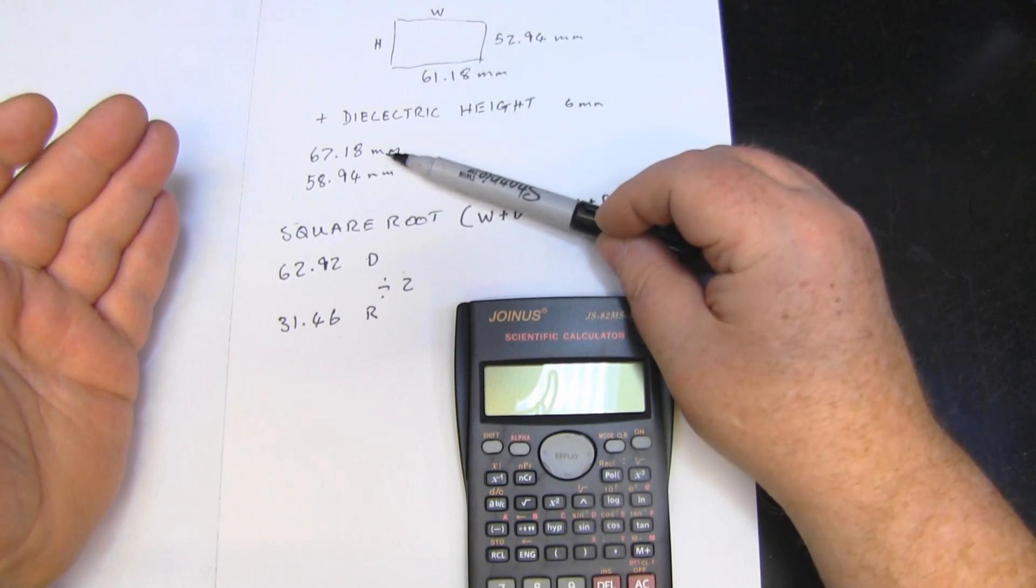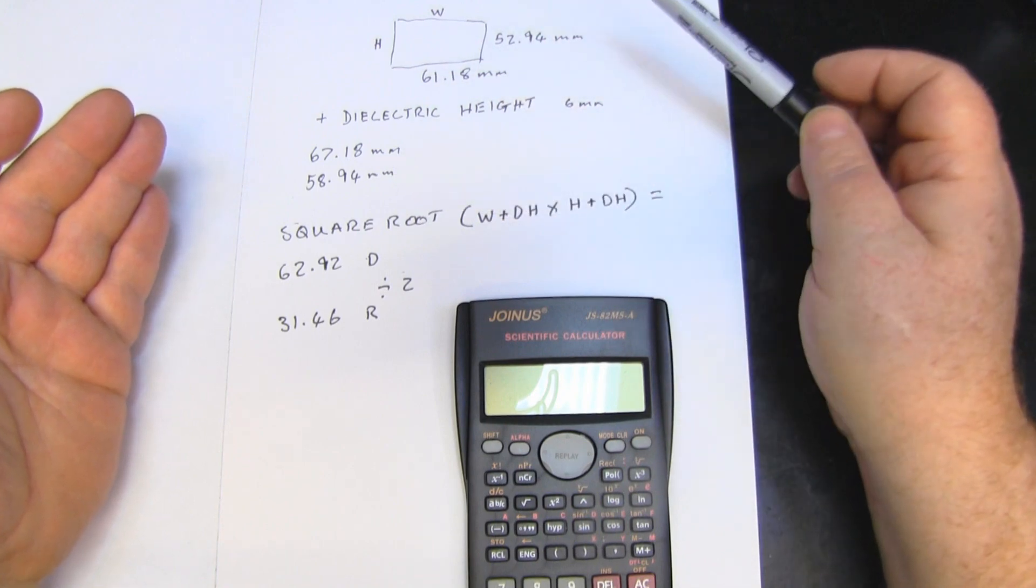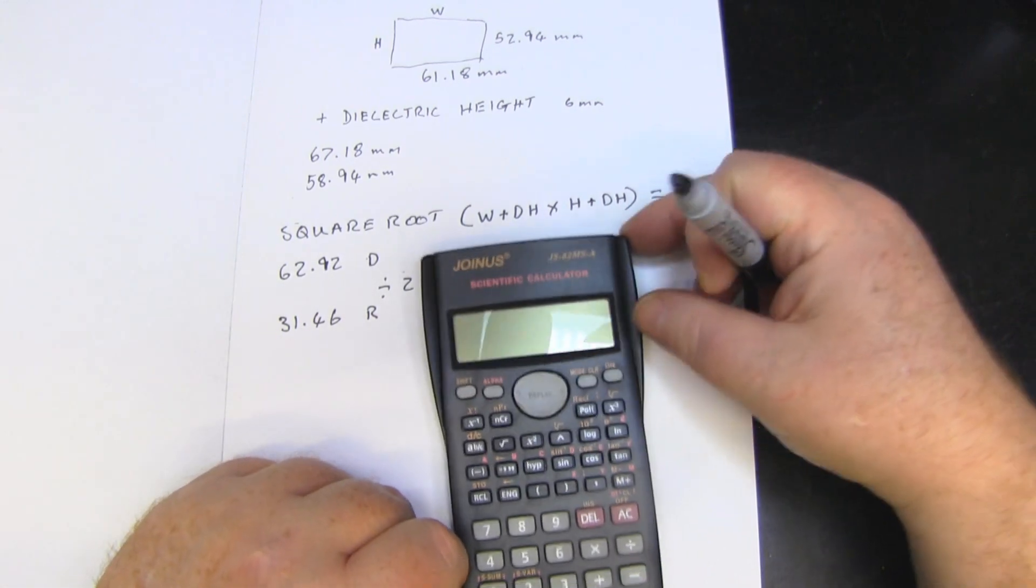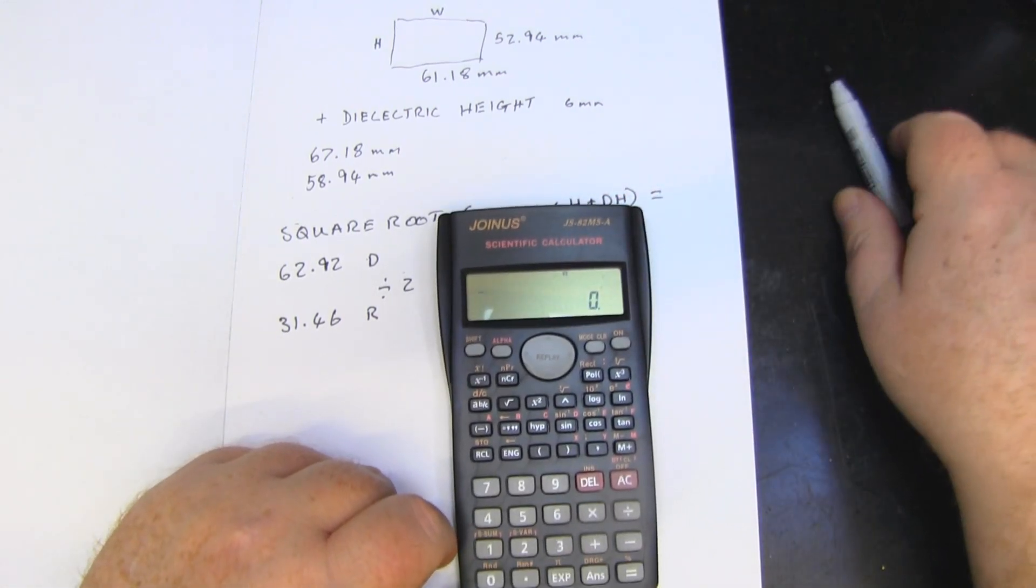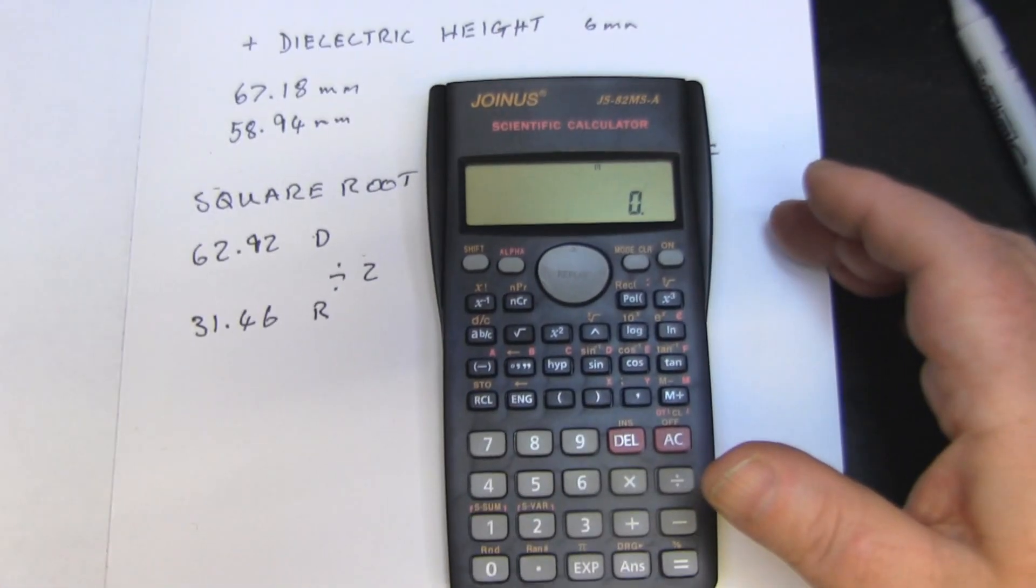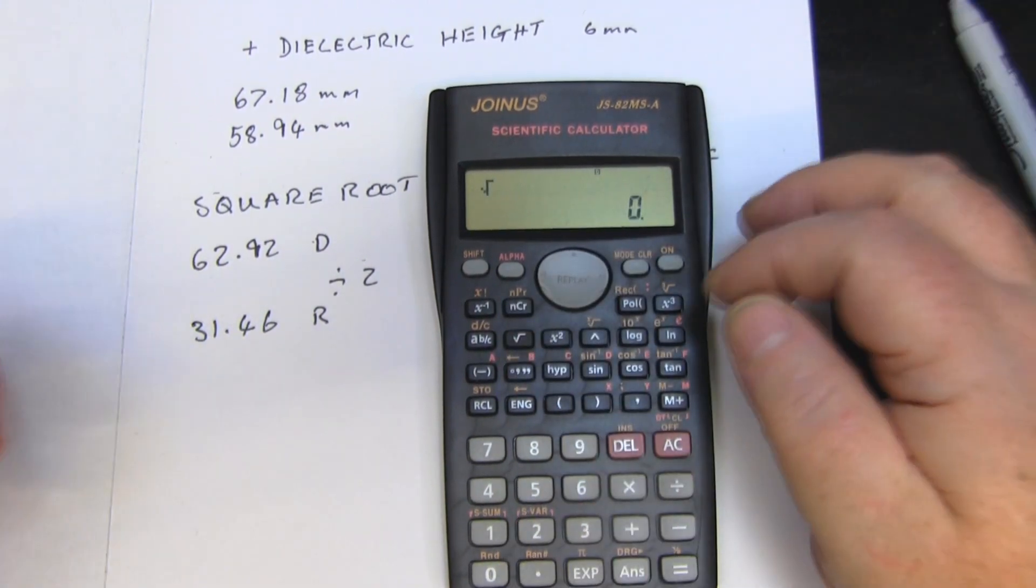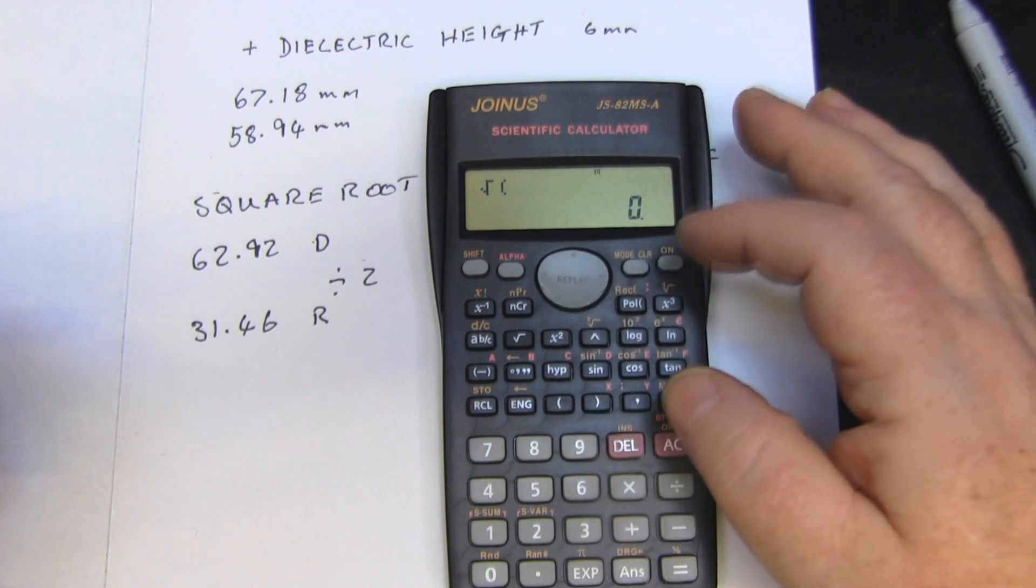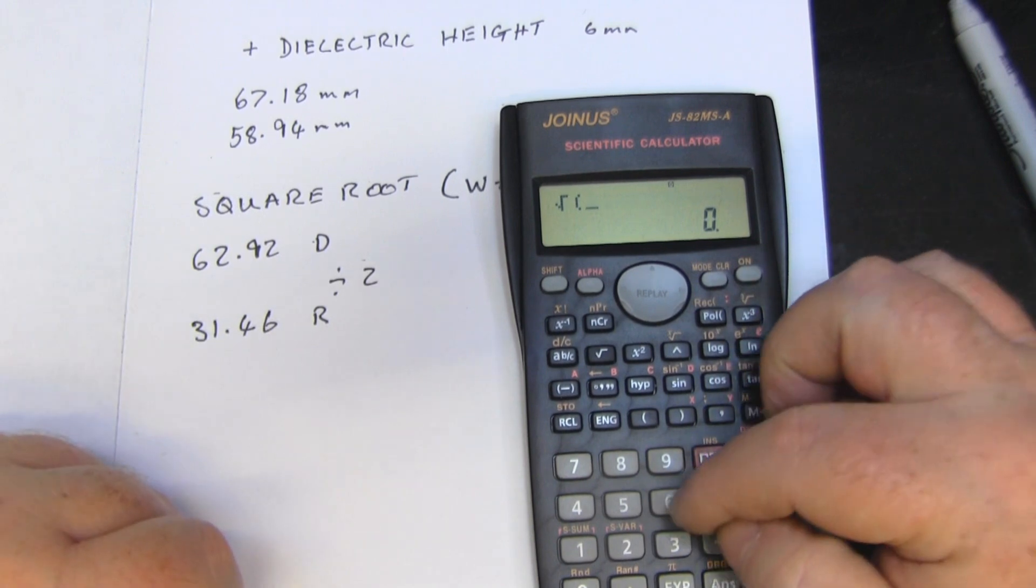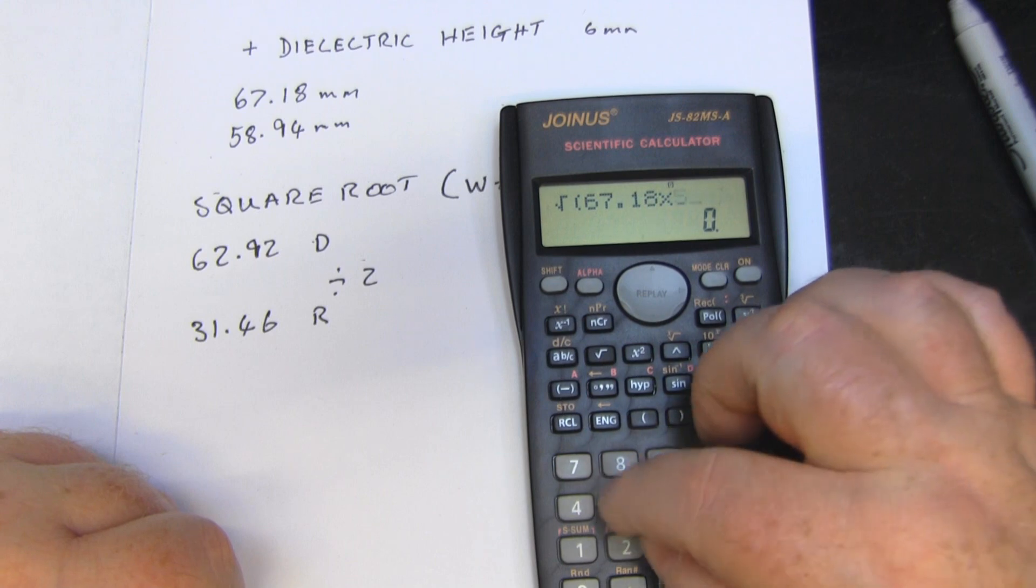So now we've got 67.18 millimeters and 58.94 millimeters. Now we've got to get the square root and times those two figures together. The easiest way to do this on a calculator - this is just a very cheap calculator - I'm going to hit the square root button, brings the square root function up, then I'm going to put a bracket on. Now I'm going to times these two numbers together: 67.18 times 58.94.